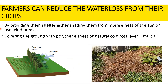How can farmers reduce water loss from their crops? First, by providing shelter — either shading them from the intense heat of the sun or using windbreaks to reduce wind speed, which helps reduce the rate of transpiration from the leaves. Second, by covering the ground with a polythene sheet or a natural compost layer of mulch, which reduces water loss from the soil.